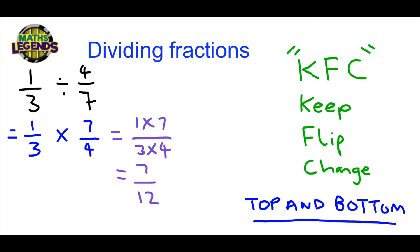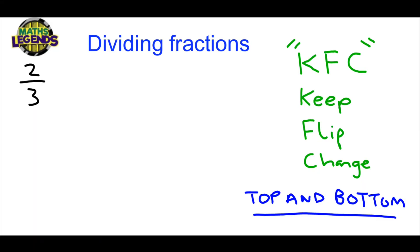Let's look at another example. 2 thirds divided by 4 fifths. This time, we're going to put a minus in front of the 4. So here, we use our KFC. So the first fraction is keep, 2 thirds. The second one, we flip. It becomes 5 over 4. It stays as a minus. The minus does not change. And the divide symbol changes to a times.